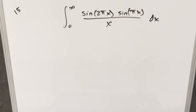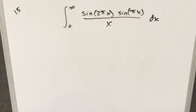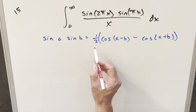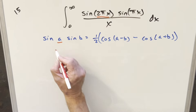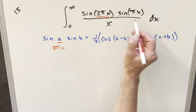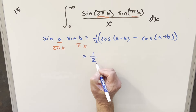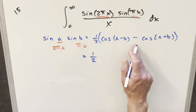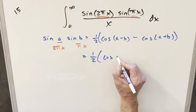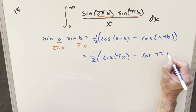To get started, I need to clean up this numerator. I can use the product-to-sum (difference angle) formula for sine to transform this. Using a = 2πx and b = πx, we apply the formula and get one half times two cosine expressions: the difference of angles minus the sum of angles. That gives us cosine(πx) minus cosine(3πx).